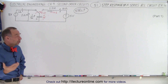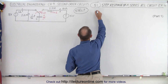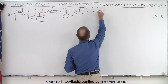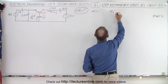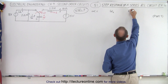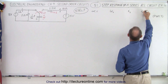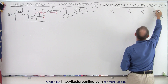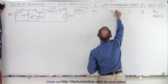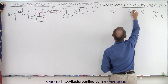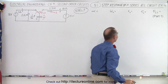We have a bunch of things to calculate first. For example, we should calculate alpha, omega sub-naught, the initial current, the initial voltage, and the steady-state voltage — all those values we should find before we do anything else.